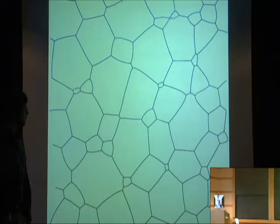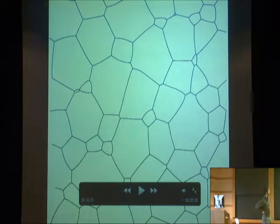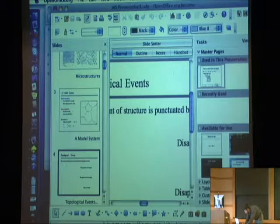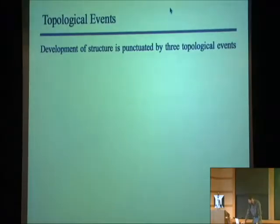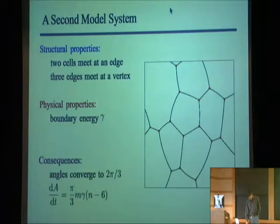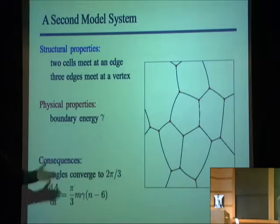It's possible that the vanishing triangles are actually vanishing diagons if they're very small — that's an open question, and very few people believe that's what's occurring, but it could be. In addition to this grain growth system, we also sometimes work with another system. This is a system of bubbles.